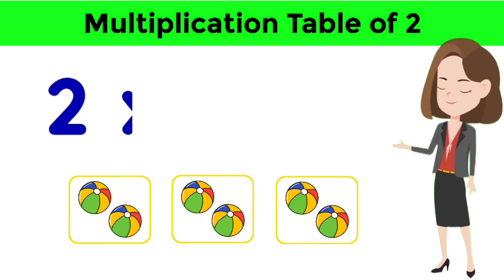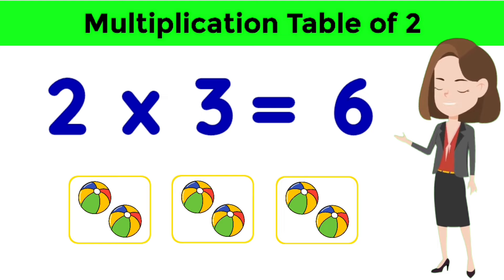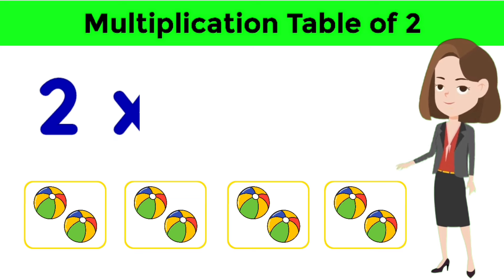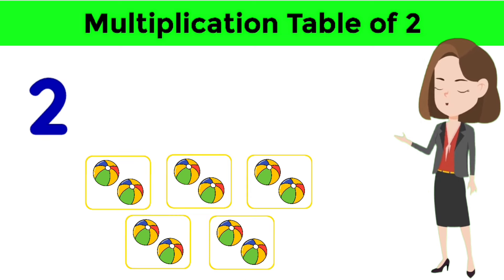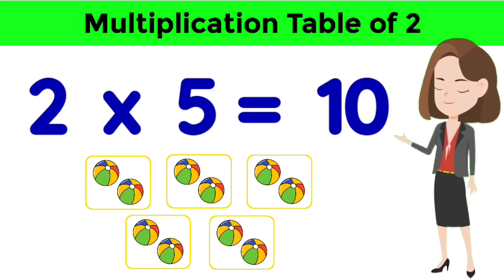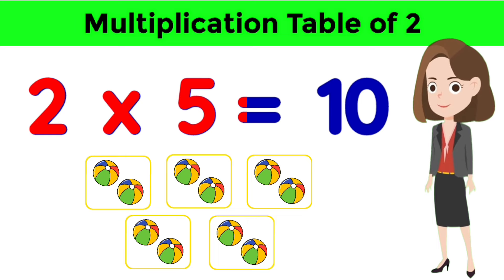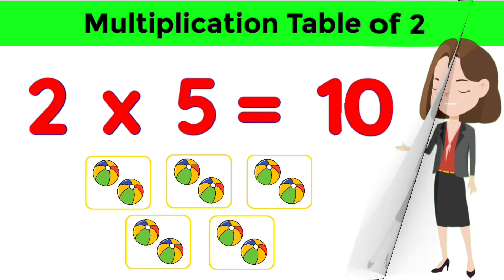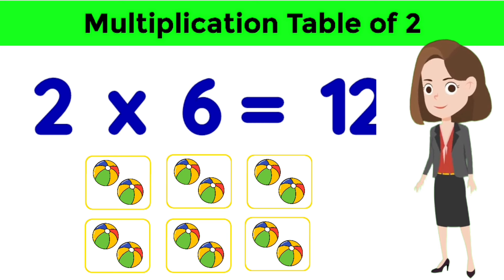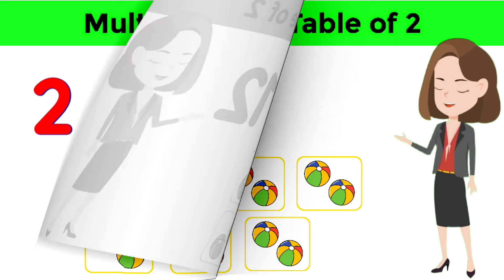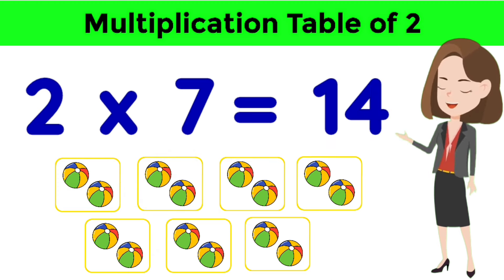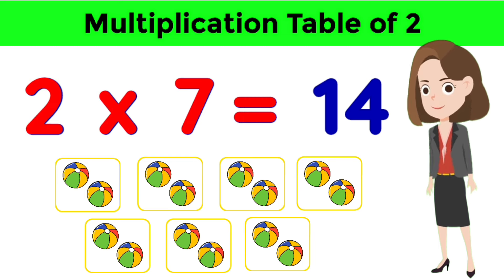Two threes are six. Two fours are eight. Two fives are ten. Two sixes are twelve. Two sevens are fourteen.